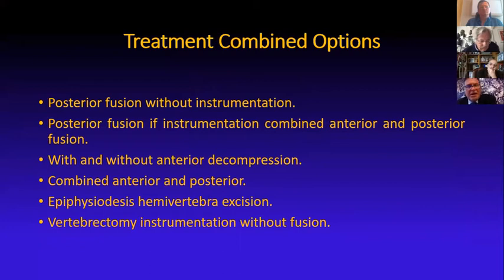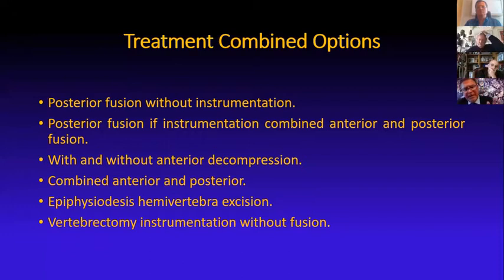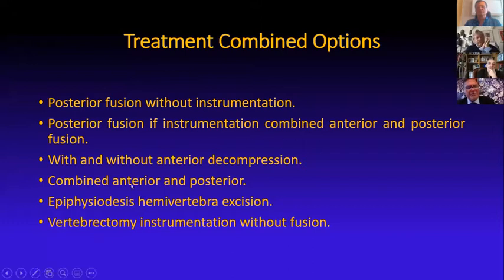There are some combined treatment options, as you saw in the last talk. You can do posterior fusion with instrumentation, you can combine it with anterior fusion with or without decompression. If the patient has minor deficit, you can consider just making traction and stabilizing the curve. You can also do some resection of vertebra and instrumentation anteriorly and posteriorly.